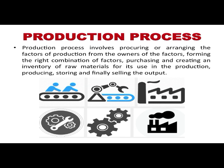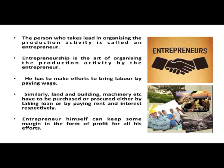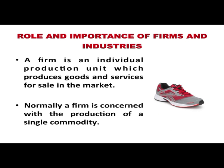The production process involves procuring or arranging the factors of production from their owners, forming the right combination of factors, purchasing and creating an inventory of raw materials, and finally producing, storing and selling the output. Somebody should take the lead in organising the production activity. The person who takes such a lead is called an entrepreneur. Entrepreneurship is the art of organising the production activity by the entrepreneur. He brings labor by paying wages, and land, buildings and machinery are purchased or procured either by taking a loan or by paying rent and interest respectively. An entrepreneur can keep some margin in the form of profit for all his efforts.